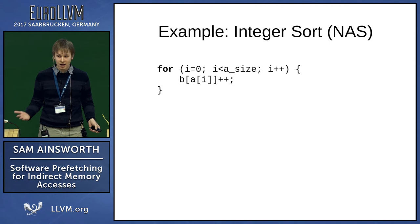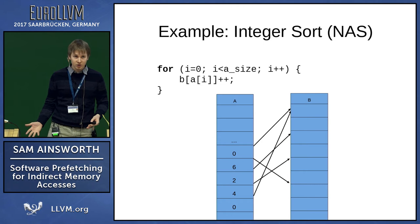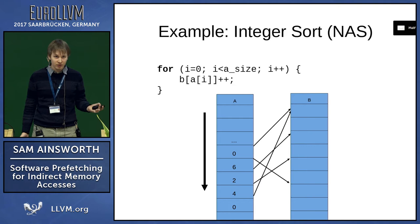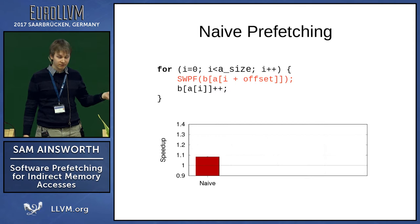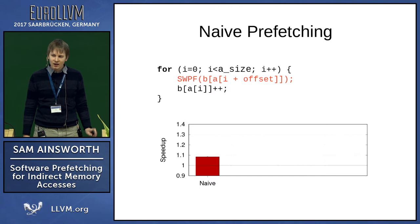An example here is integer sort from NAS Parallel. We've got two arrays, A and B. B is accessed indirectly using the values of A, so our memory accesses are all over the place in B. We can't use the hardware stride prefetch for that — it's not going to pick it up. But we can software prefetch it very easily, because we can look ahead in A, generate the addresses we're going to access a few iterations ahead, and do a prefetch for those instead. We insert a software prefetch that does just that, and we get 9% performance improvement. That's not amazing — it's okay, but it's not ideal.